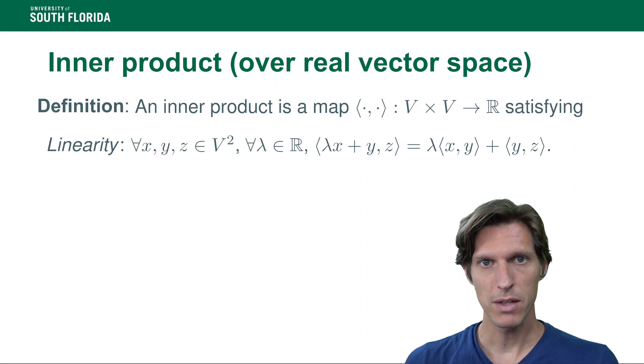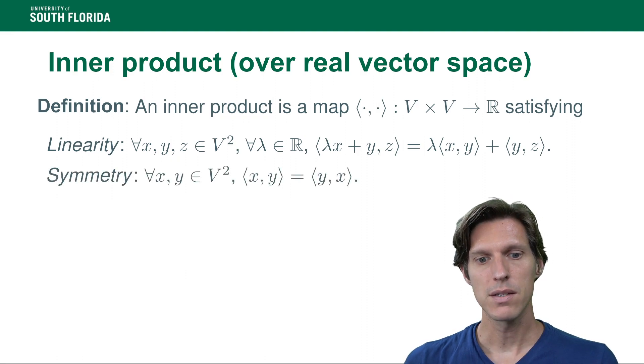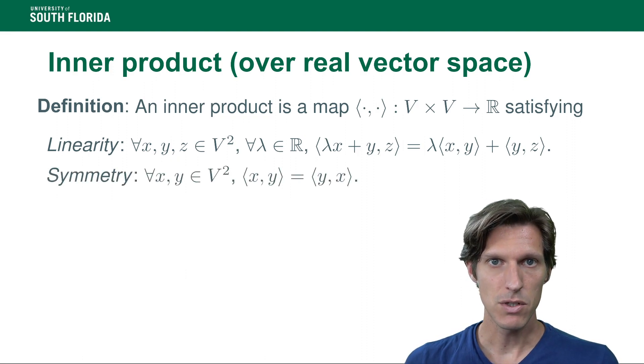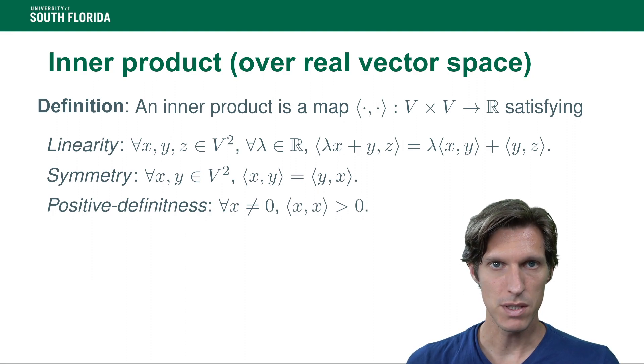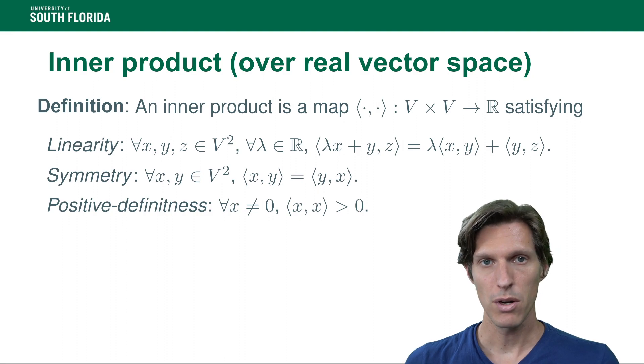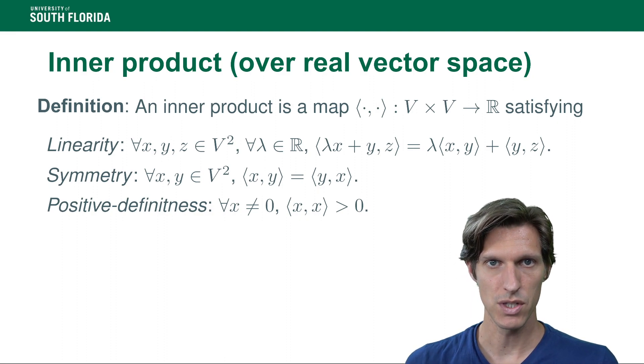It's linear with respect to the first coordinate. It's symmetric, which means ⟨x,y⟩ equals ⟨y,x⟩, and it's positive definite. The positive definiteness property means that ⟨x,x⟩ is always strictly greater than zero except when x equals zero, in which case it equals zero.